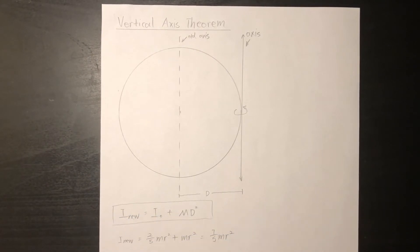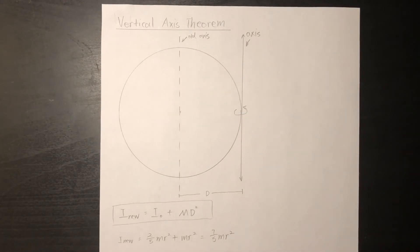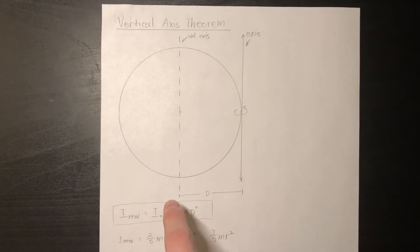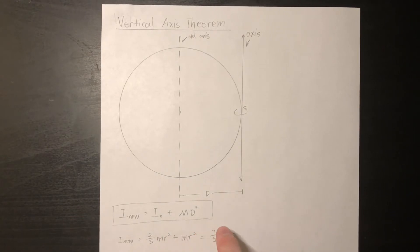The next concept, the parallel axis theorem, is relatively important in rotational dynamics. When we want to find the moment of inertia of a sphere rotating around an axis tangent to its surface, we cannot use the original formula, since we are not rotating around the center of mass. We apply the parallel axis theorem: I_new equals the original moment of inertia plus mass times distance squared, where distance is the separation between the two parallel axes. For our sphere, I_new equals two-fifths mr squared plus mr squared, which gives seven-fifths mr squared. Always remember the axes must be parallel.